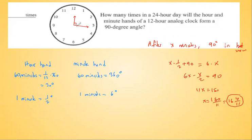When the minute hand moves 180 degrees more than the hour hand beyond that, you get another 90-degree angle — in the other direction. So the second equation is: X/2 plus 270 equals 6X, which gives 11X/2 equals 270, so X equals 540/11. Dividing, that's 49 and 1/11 minutes — the second time the angle between the hour and minute hand is 90 degrees.